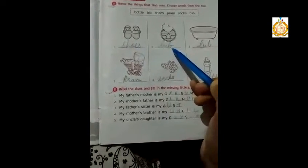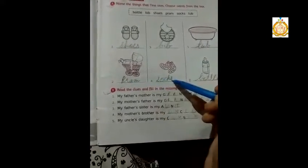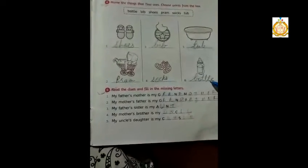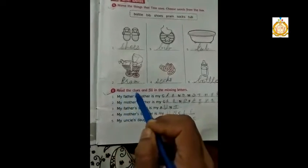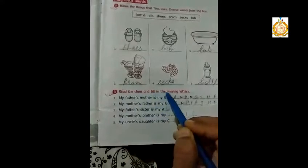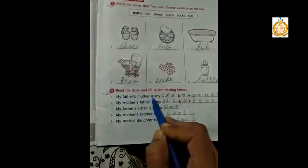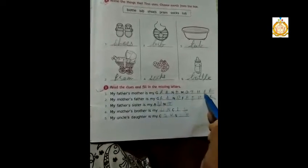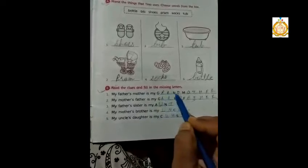Second one is bib, tub, palm, socks, and bottle. Next exercise B: Read the clues and fill in the missing letters. First question: My father's mother is my grandmother. Spelling of grandmother is G-R-A-N-D-M-O-T-H-E-R.